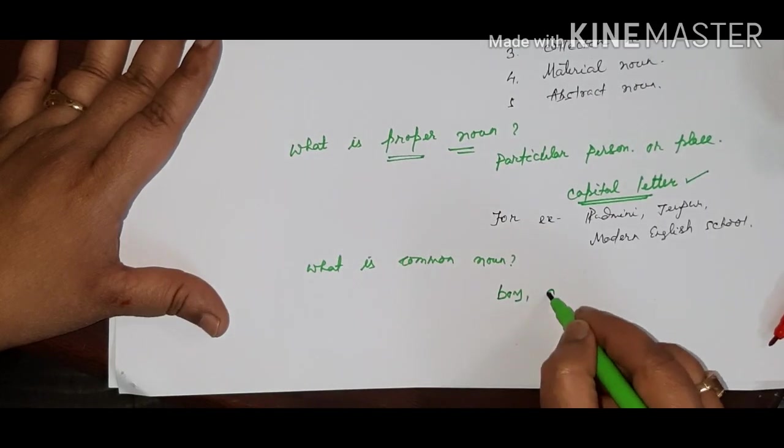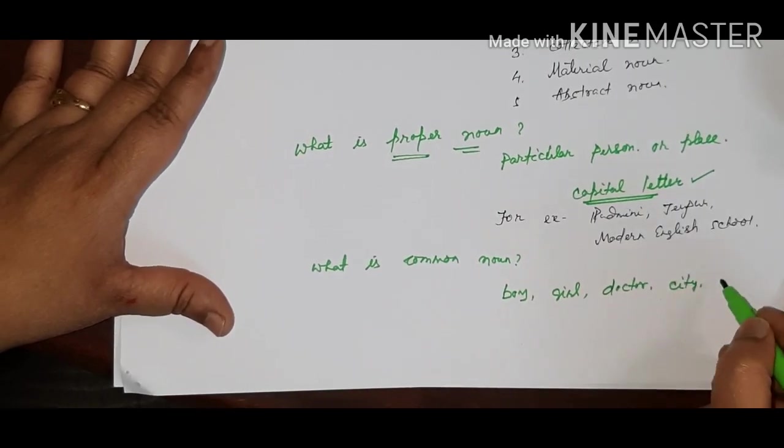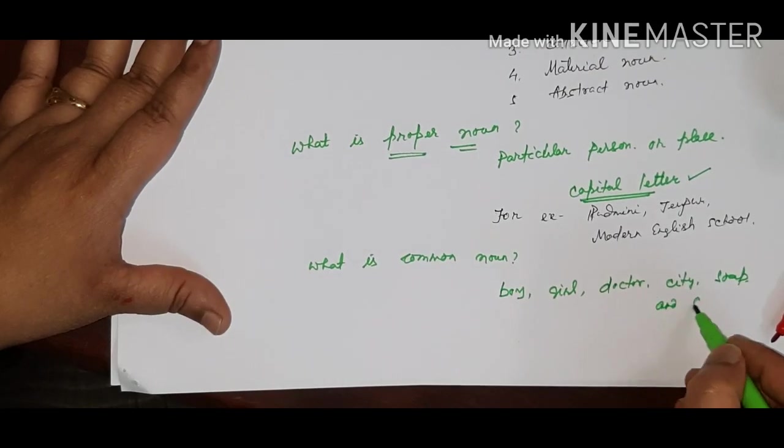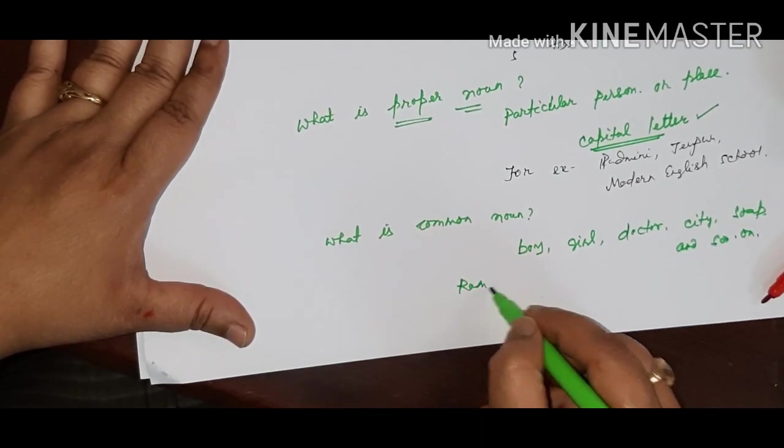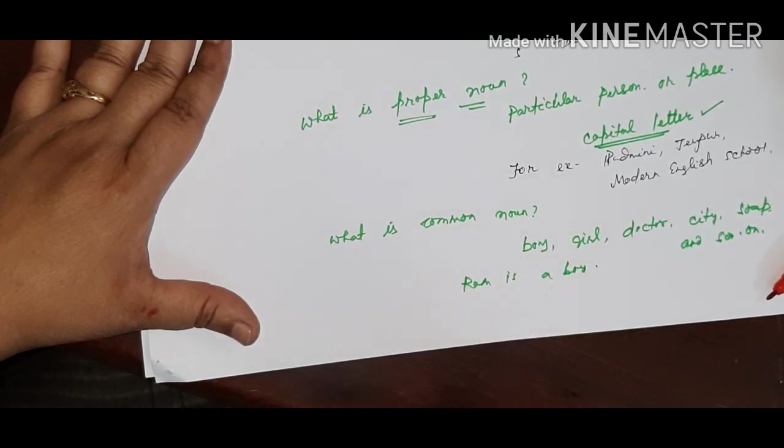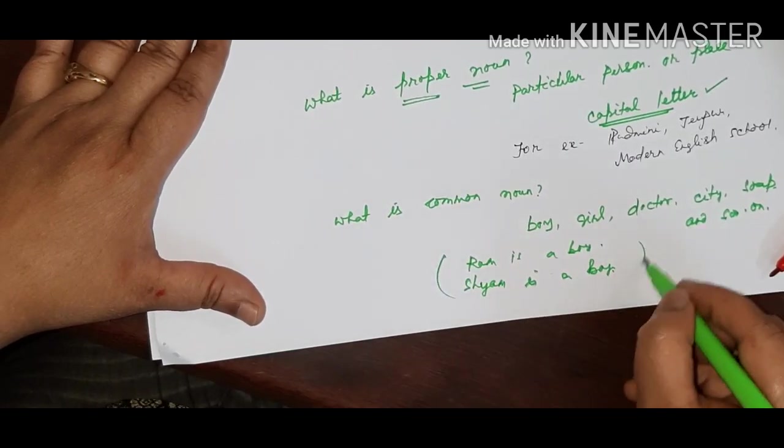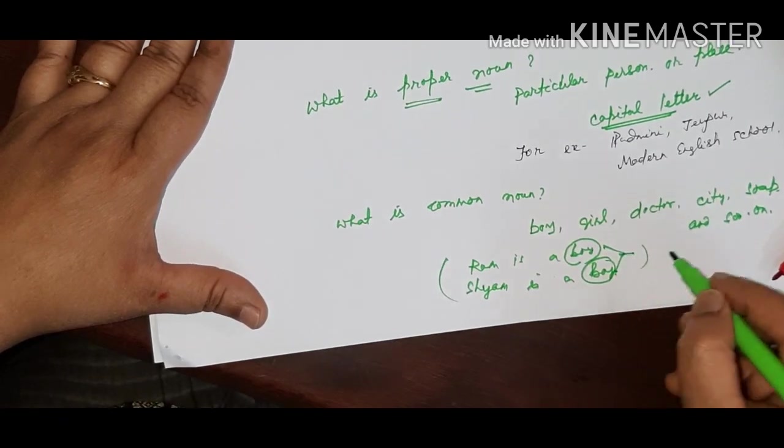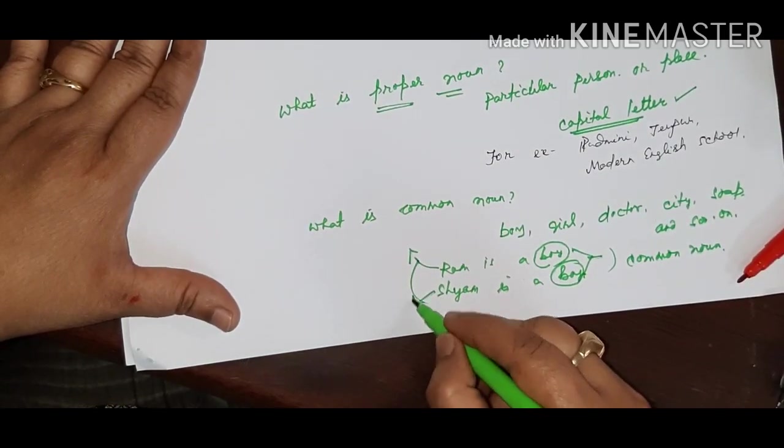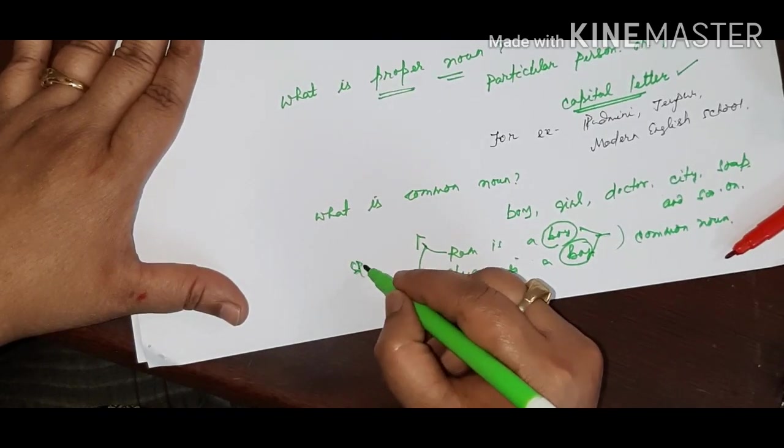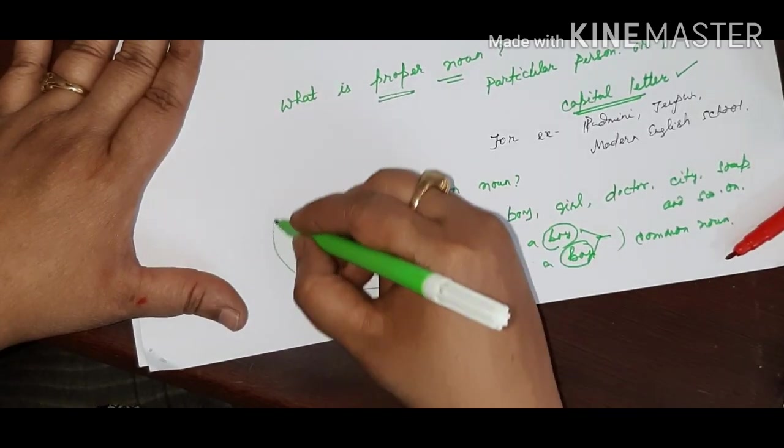boy, girl, doctor, city, and so on. Just here, Ram is a boy. Shyam is a boy. In both the sentences, boy is common. That's why this is known as common noun. And here, Ram is a different person, and Shyam is a different person, and they have the special name. That's why they are known as the proper noun.